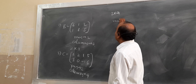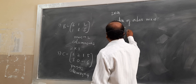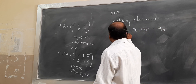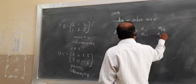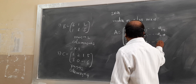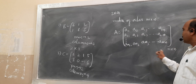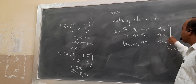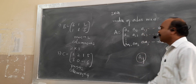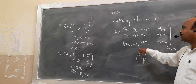Now we discuss the matrix of order M by N. If we consider A equal to [A11, A12, A13, ..., A1N; A21, A22, A23, ..., A2N; ...; AM1, AM2, AM3, ..., AMN], this is called the matrix of order M by N. It is having M rows and N columns. In general, Aij is the element of the matrix present in the ith row and jth column. It shows the position of that element in the given matrix.